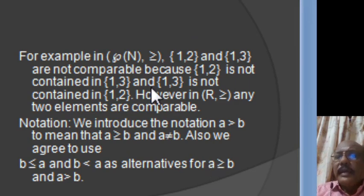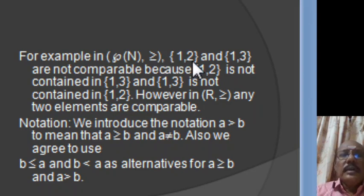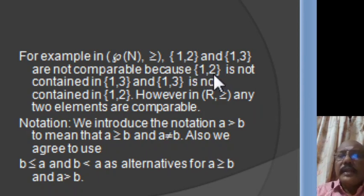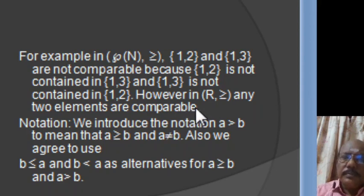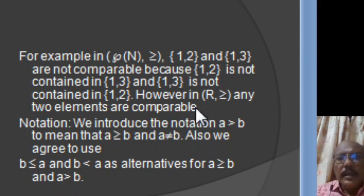For example, consider the partially ordered set (P(N), ≥). In this partially ordered set, the sets {1,2} and {1,3} are not comparable, because {1,2} is not contained in {1,3} and {1,3} is not contained in {1,2}. However, in the partially ordered set (R, ≥), any two elements are comparable. So in some partially ordered sets any two elements are comparable, and in some there may be pairs which are not comparable.